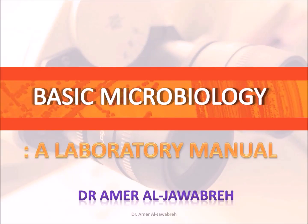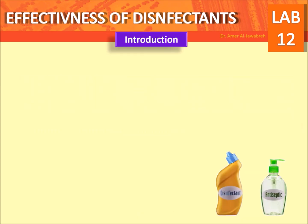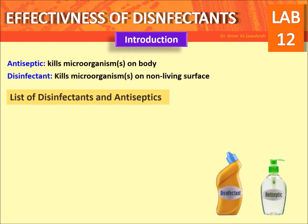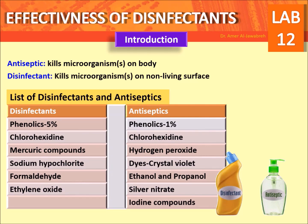Basic microbiology: a laboratory manual — testing effectiveness of disinfectants and antiseptics by disk diffusion method. Introduction: an antiseptic kills microorganisms on the body; a disinfectant kills microorganisms on non-living surfaces. List of disinfectants includes: phenolics, five percent chlorhexidine, mercury compounds, sodium hypochlorite, formaldehyde.